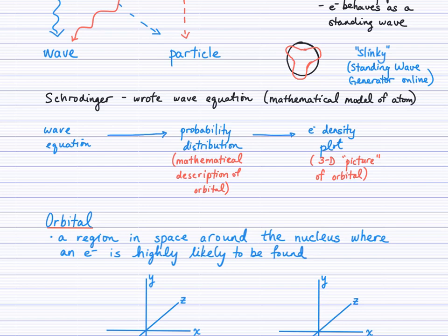Now, Erwin Schrodinger came along after that and wrote the wave equation, which really is a mathematical model of the atom. So his wave equation, as you can see here, led to a mathematical description of what we call orbitals, which is called a probability distribution, which then leads us, through the mathematics of this, to an electron density plot, which is really just a 3D picture of the orbitals.